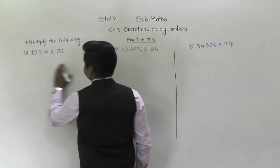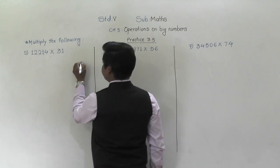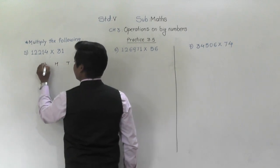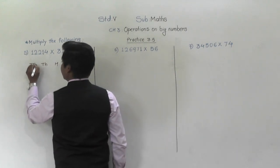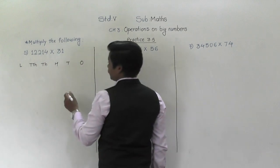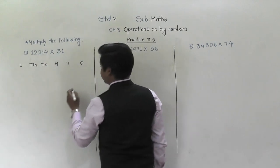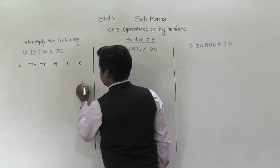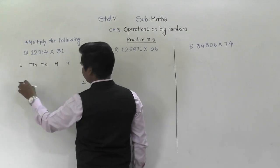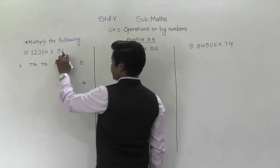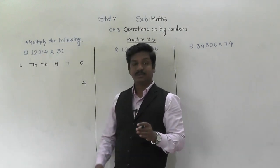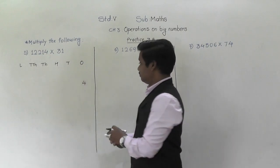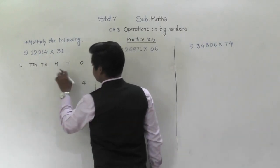First of all, we will write the name of the places: ones, tens, hundreds, thousands, ten thousands, lakh. Leave here two lines to take carry, because now there is 31 whose table you don't know. So we are going to use another method — leave two lines for carry over.